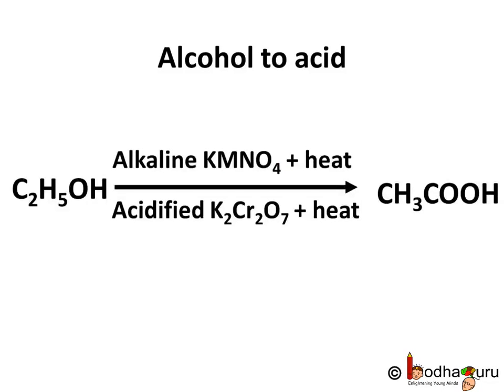Oxidation of organic compounds serves many purposes other than producing heat. For example, through oxidation one organic compound can be turned into another organic compound. Alkaline potassium permanganate or acidified potassium dichromate oxidizes alcohols to acids, and they are oxidizing agents.